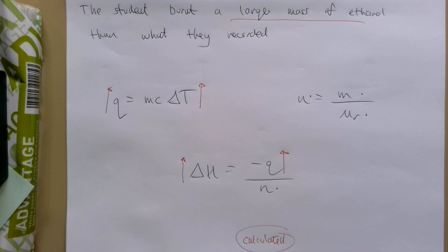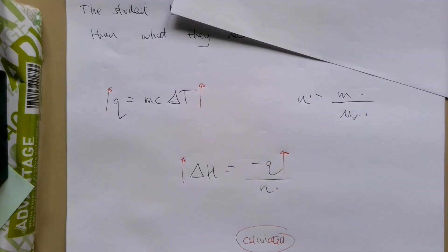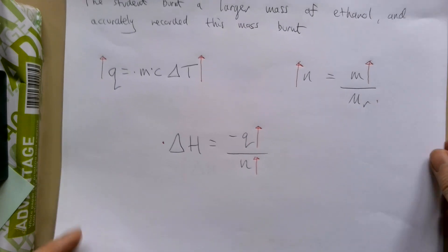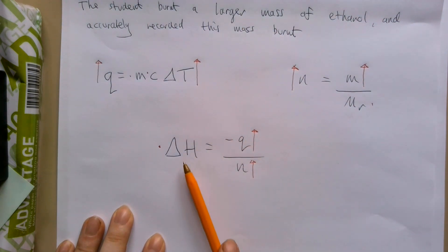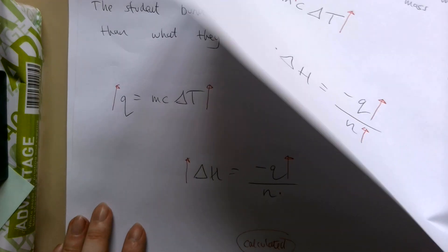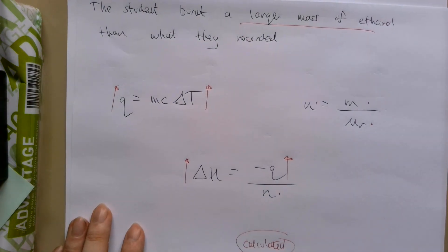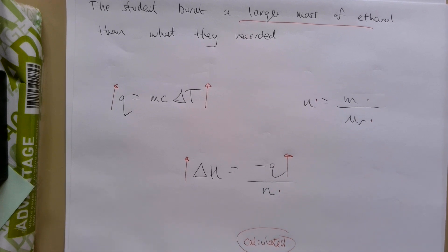So you can see the difference between these two. If I put this last one back on, is that if they accurately record the mass, they'll still get the same delta H, even if that mass is greater. Whereas if they mess up and inaccurately record the mass, it'll appear to the student as though the delta H is now more exothermic.